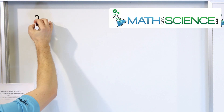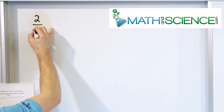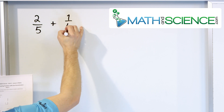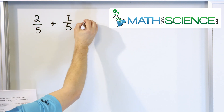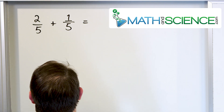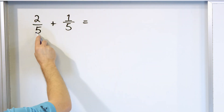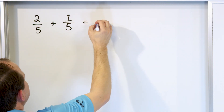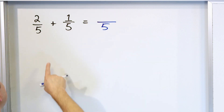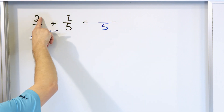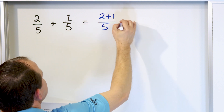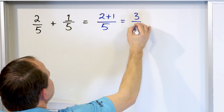Let's say we have the fraction 2 fifths, and we're going to add that to the fraction 1 fifth. We have to have a common denominator in order to add any fractions or subtract them, and we have 5, which means in our answer, 5 will be in the denominator. Then we add the numerators. 2 plus 1 gives us an answer of 3 fifths.